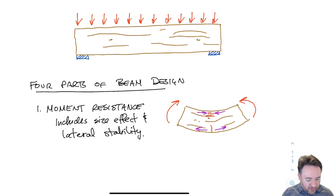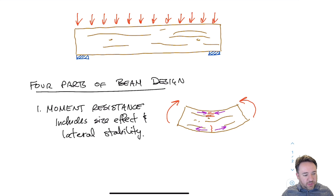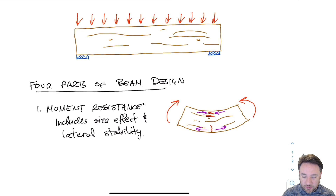Part of that compression part at the top, another thing that we need to talk about is lateral torsional buckling, which is actually not the top crushing but the top actually buckling out of plane. That causes our member to effectively fail as well. We're going to spend significant time when we talk about bending discussing lateral torsional buckling failure and how to calculate the strength of that.